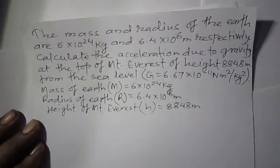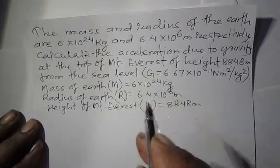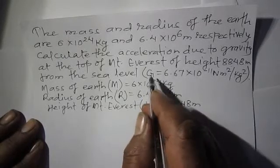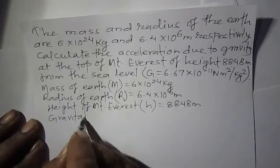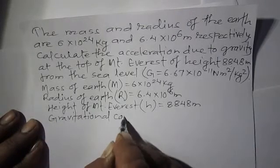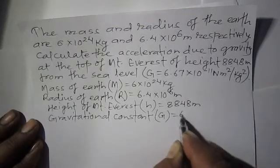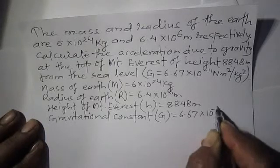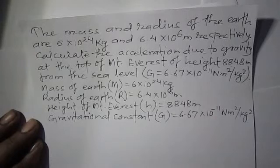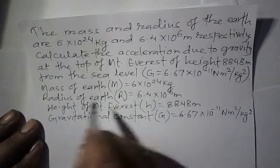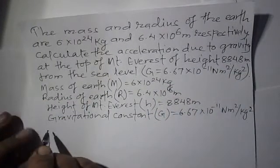The gravitational constant is denoted by capital G and its value is 6.67 into 10 to the power minus 11 Newton meter squared per kg squared. The question asks for the acceleration due to gravity at the top of Mount Everest.